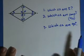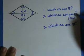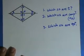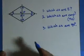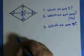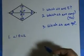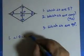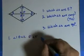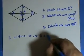Alright, let's answer the questions. There are going to be a lot of answers for number two, so I'm only going to give sample answers. Number one: which angles are congruent? Angle one is congruent to angle two, and angle two is congruent to angle five and angle six.